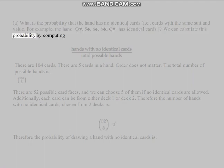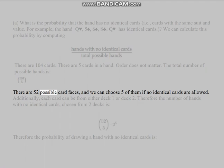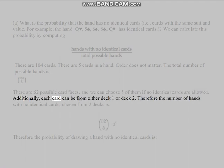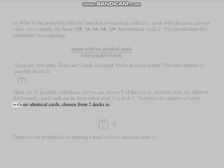We can calculate this probability by computing: There are 104 cards. There are 5 cards in a hand. Order does not matter. The total number of possible hands is C(104,5). There are 52 possible card faces and we can choose 5 of them if no identical cards are allowed. Additionally, each card can be from either deck 1 or deck 2. Therefore the number of hands with no identical cards, chosen from 2 decks, is calculated. Therefore the probability of drawing a hand with no identical cards is the ratio.